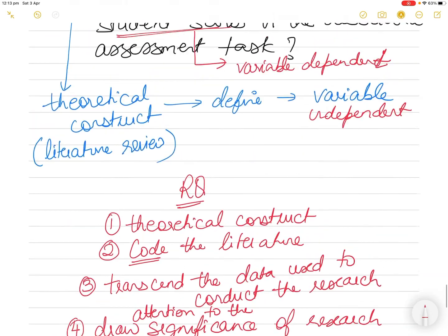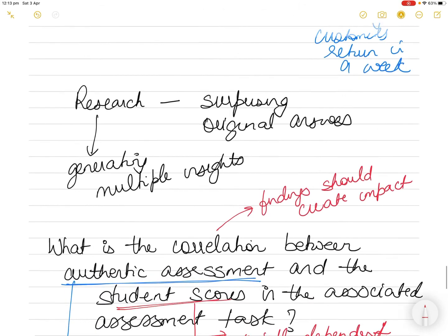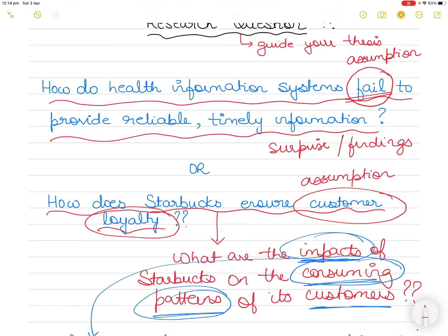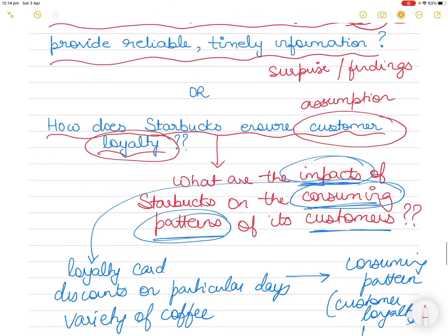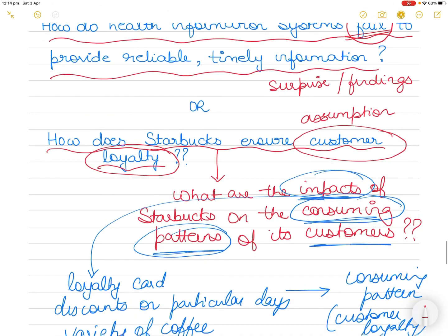A research question is something that people don't know already. You should be able to surprise them and explain the relationship between variables - does authentic assessment or higher authenticity lead to higher student scores? Or do the policies and procedures of Starbucks really lead to customers returning? Are health information systems providing reliable and timely information - you cannot say that they are failing, you have to find out. Other questions can be: how does climate-driven changes in the biophysical environment affect the sustainability of subtropical parklands? Or what strategies do union organizations use to retain their radicalism over time?